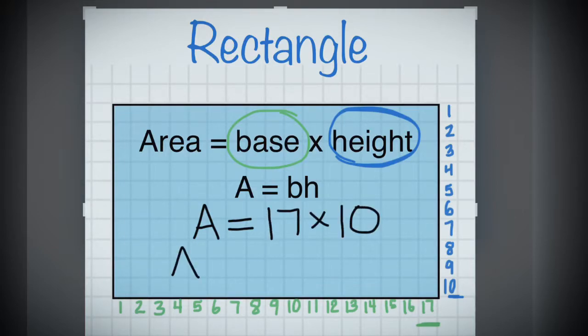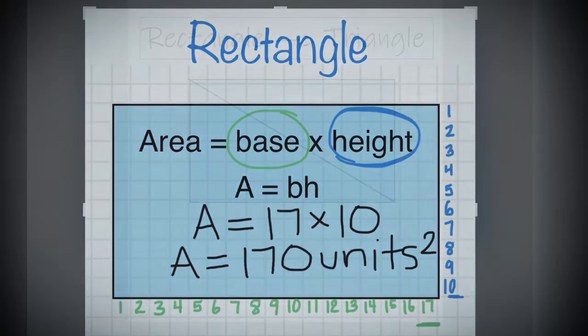So therefore, 17 times 10 gives us an area of 170 units. Those little squares, the blue, there's 170 of them.